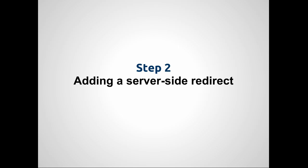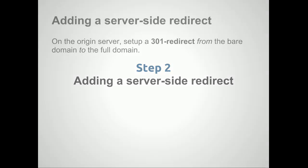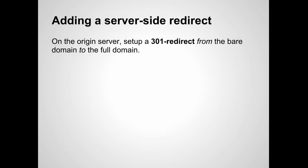The next step is to set up a server-side redirect on your origin server. This redirect, also called a 301 redirect, will reroute all requests for the bare domain to the full domain hosted by PageSpeed service. Make sure this redirect from the bare to full domain has not already been added to your origin server. If so, you can skip this step. Otherwise, remove any other 301 redirects present on your server before proceeding.